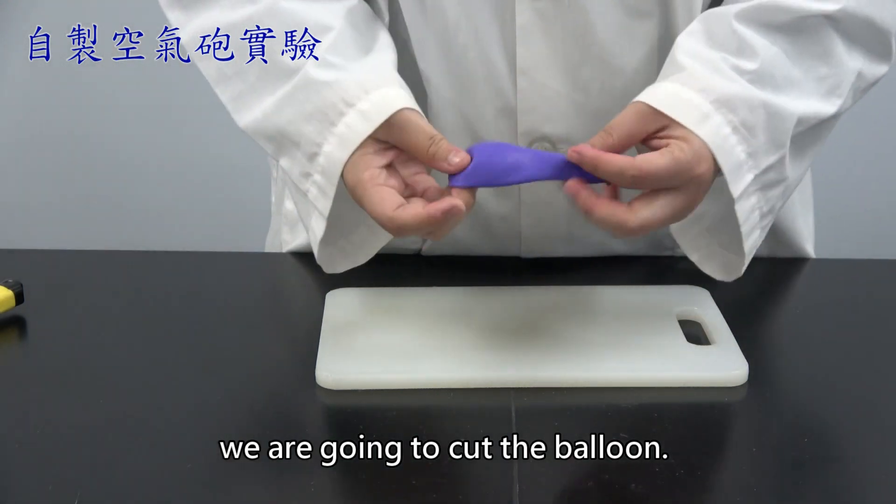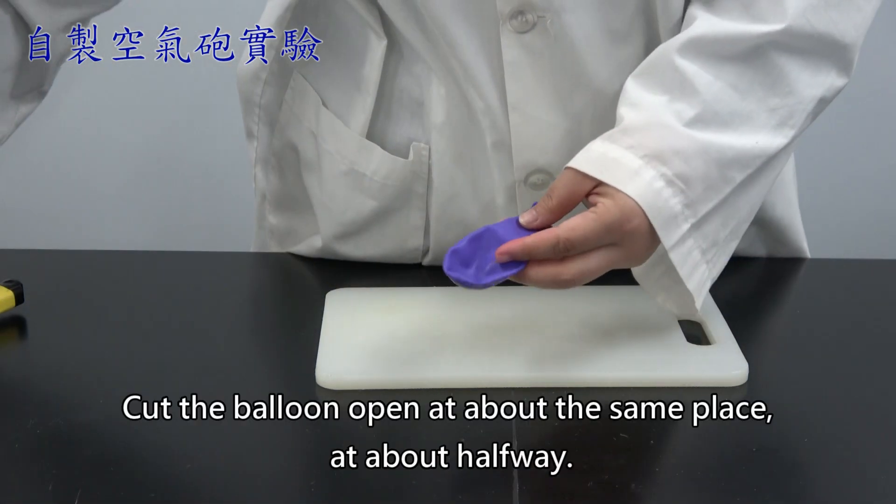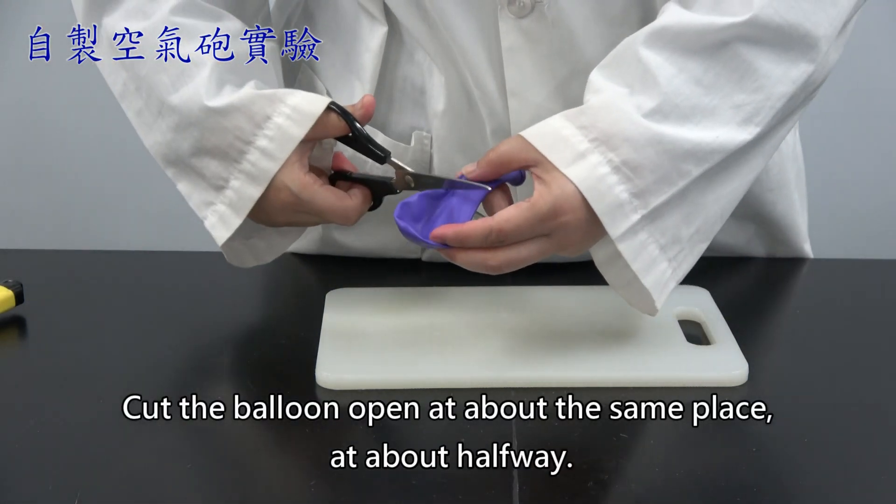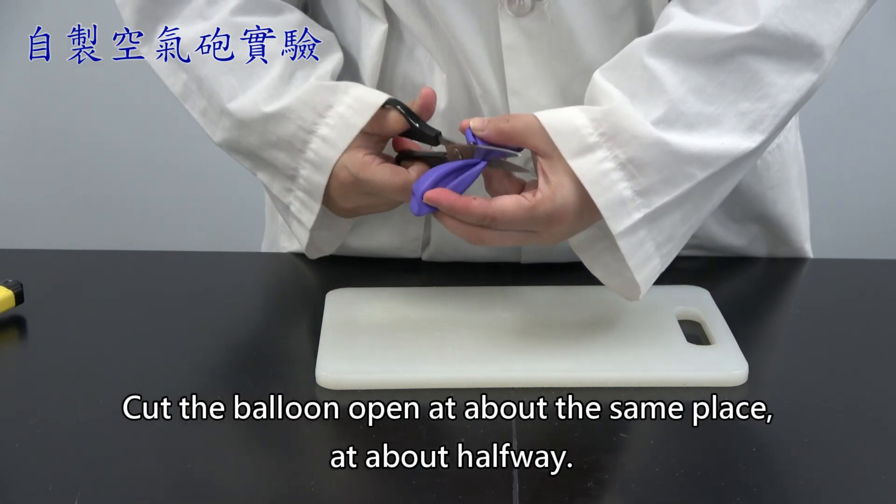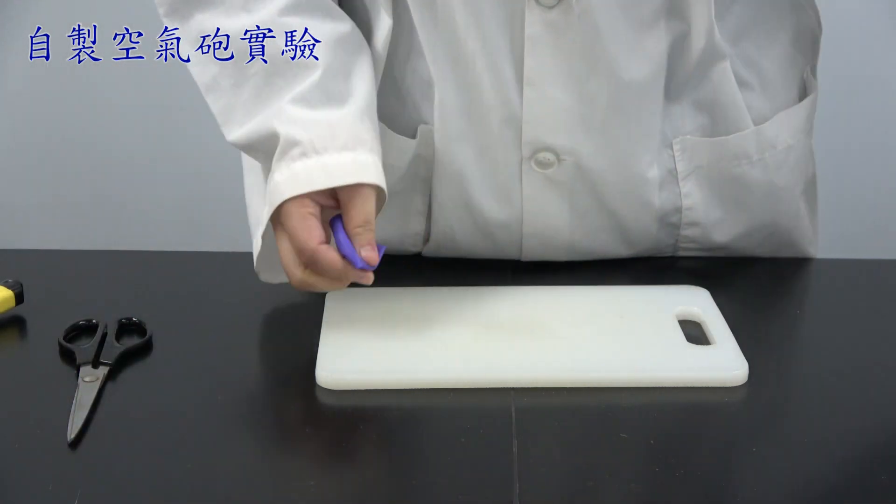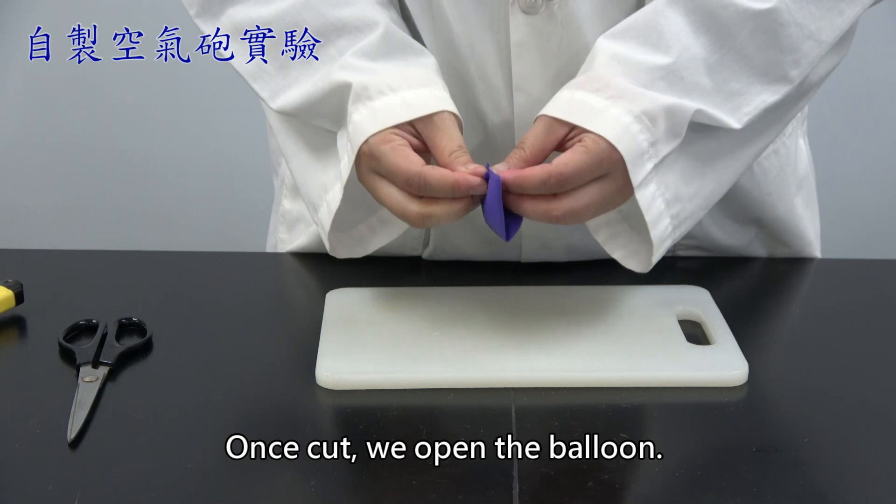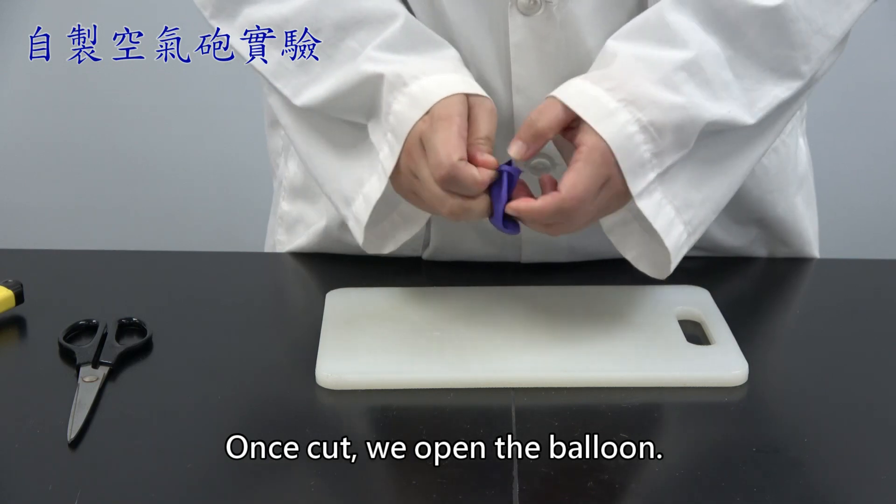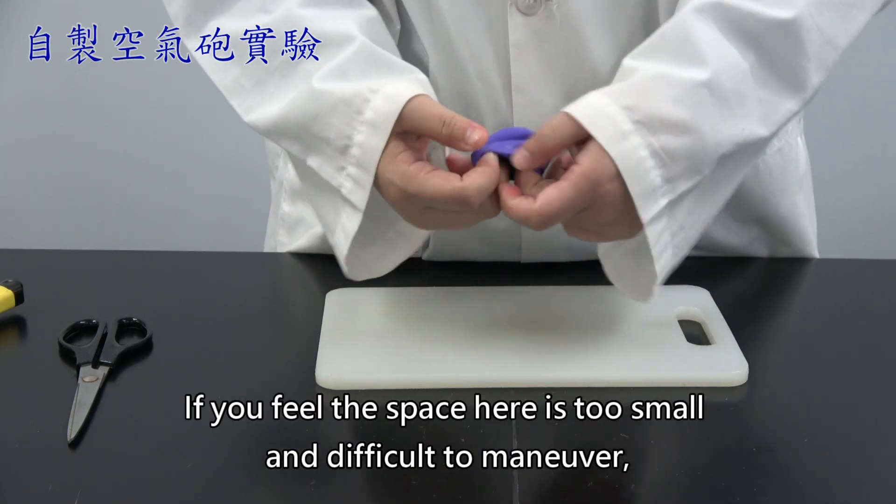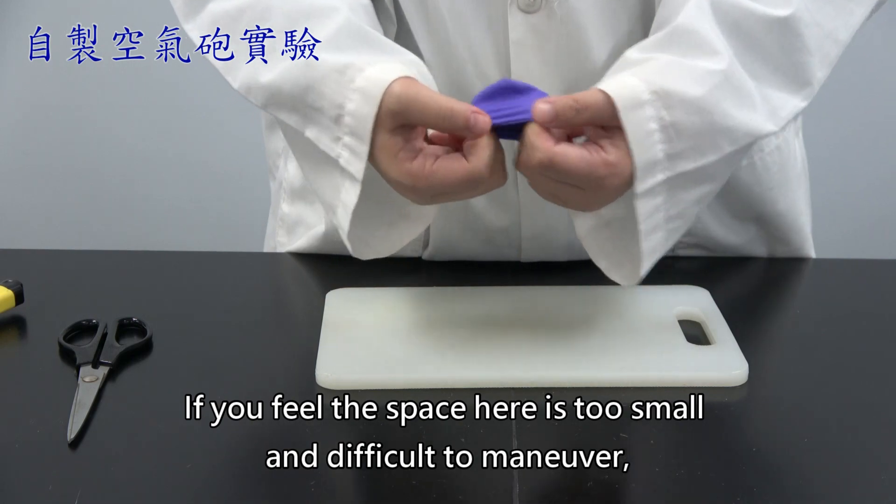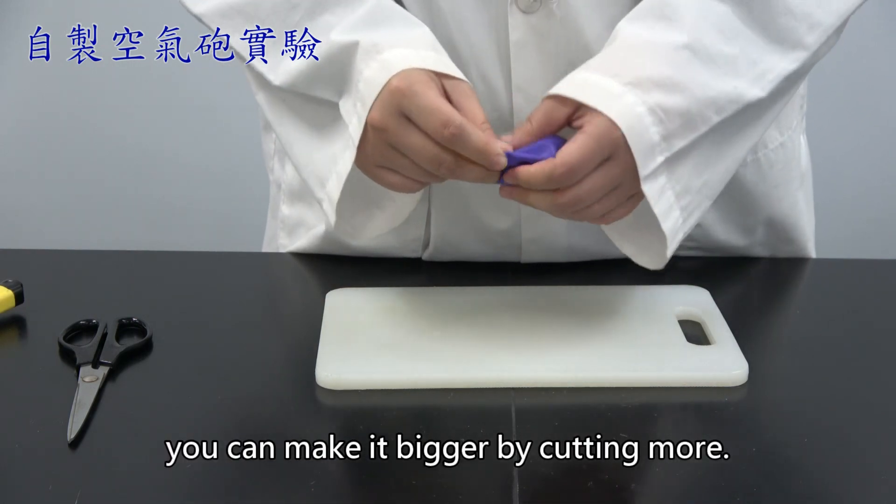Once trimmed, we are going to cut the balloon. Cut the balloon open at about the same place at about halfway. Once cut, we open the balloon. If you feel the space here is too small and difficult to maneuver, you can make it bigger by cutting more.